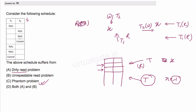In the given schedule, we have to find out which problem is present. With the given data, it is difficult to identify whether there is a phantom problem. So first we will check for the dirty read problem. We check whether some transaction has written a value and not yet committed, but another transaction is already reading it. In the schedule, transaction T2 is performing a write on variable a and then it commits before transaction T1 reads it. So there is no problem of dirty read.